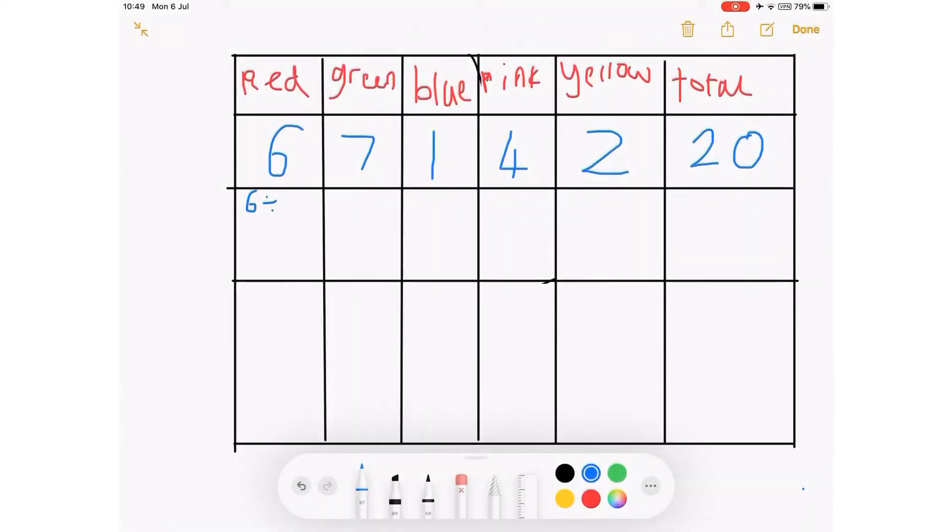So now let's write in what we need to do: 6 divided by 20, 7 divided by 20, 1 divided by 20, 4 divided by 20, 2 divided by 20, and that's it. Then after, we'll write down the answers.